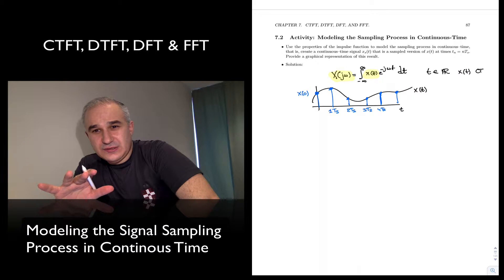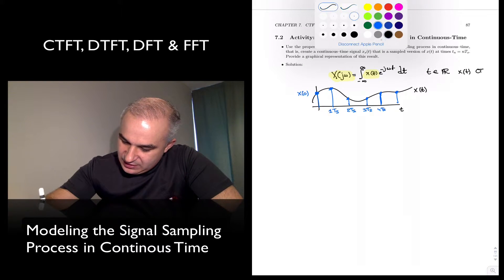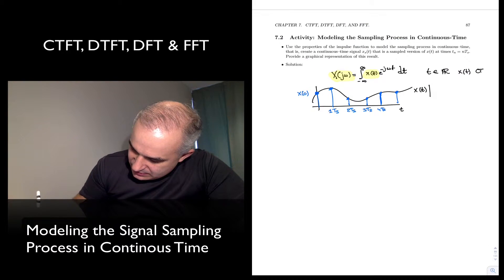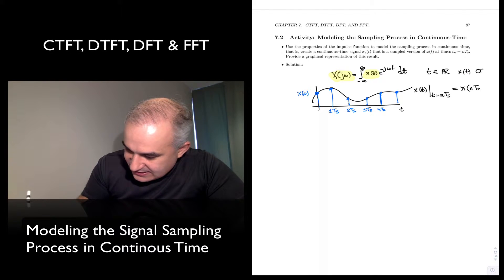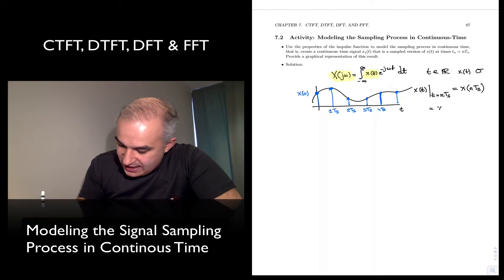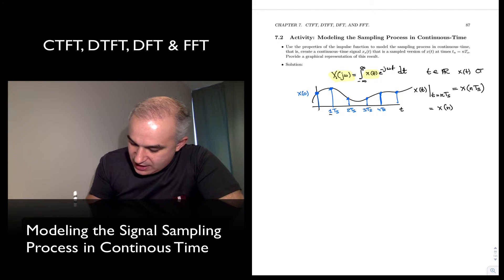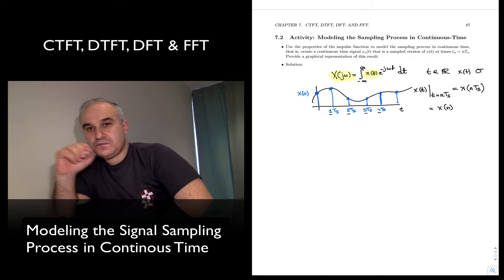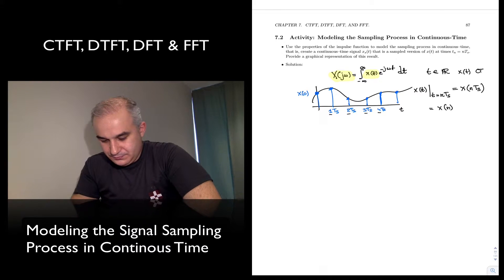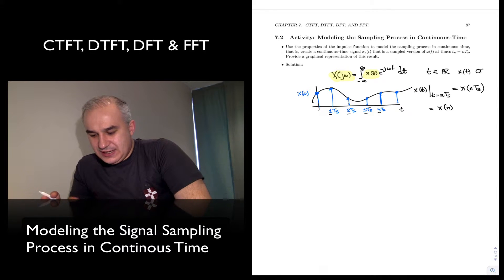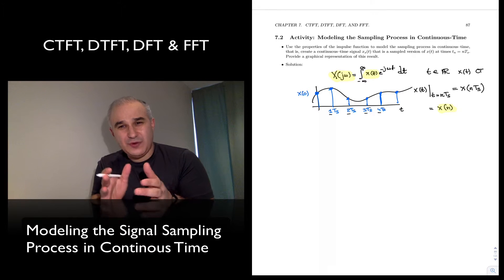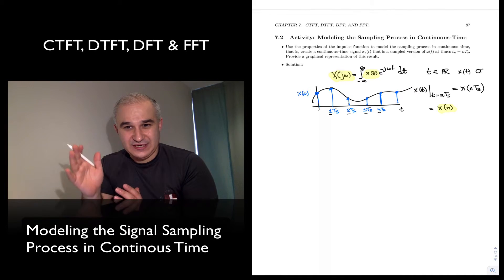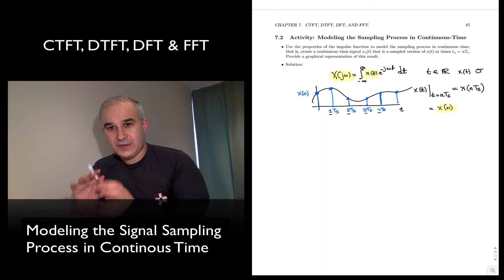We already established, when we went over sampling, that if we take x(t) and evaluate it at t = nTs to create x(nTs), which is equal to x[n] — n just being the sample number — the sampling interval Ts tells you the time between one sample and the next. Sampling was the process of measuring a continuous time signal at periodic intervals to create a discrete time signal.